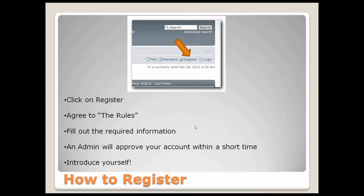So how do you register? If you haven't been to the forums before, you would access the link through our website under support or customers, click on ACEweb forums, and then up in the top right you'll see the register button. You click that, agree to some rules about not posting spam or questionable content, and fill out the required information — your first and last name, the organization you belong to, and an email address. You submit that, and one of us here will approve your account within a short amount of time, and then you'll be able to post on the forums.